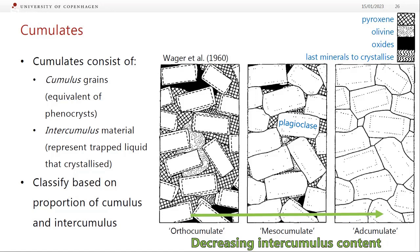When describing cumulates, they consist of cumulus grains — like the intrusive version of a phenocryst — which are the big crystals making up a framework in the rock. In between those we have a variable amount of intercumulus material, representing liquid that got trapped between the crystals and then crystallized in place. We can classify cumulate rocks based on the proportion of cumulus to intercumulus minerals: if there's lots of intercumulus, it's an orthocumulate; with less, it becomes a mesocumulate; and with virtually no intercumulus material, it's called an adcumulate.